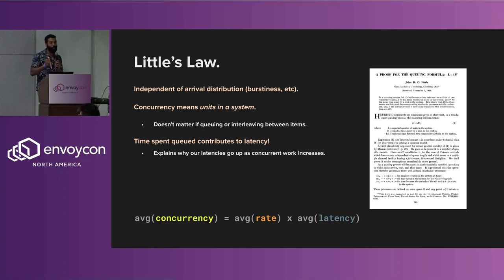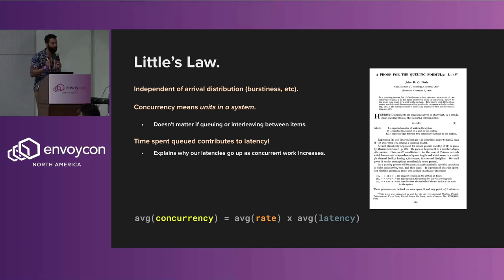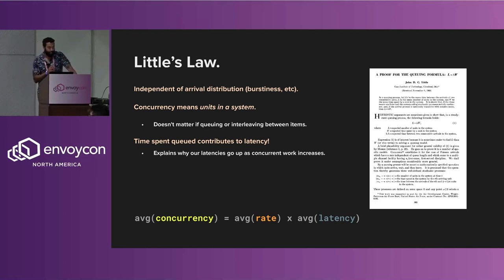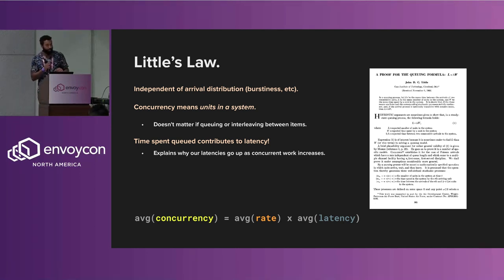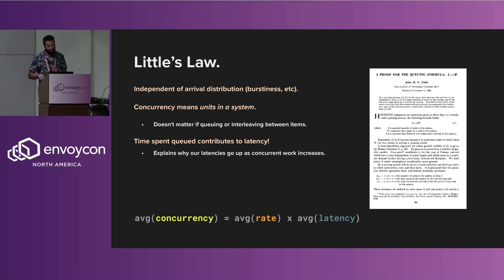It seems obvious to a lot of people, but there's some nuance here. It's independent of the arrival distribution of the requests — we can have giant tails, or it can all be that exact same value. The concurrency in a system — and by system I mean an application — can take on any form: it can be a queue, or we can just have a bunch of floating requests that we're interleaving between and juggling. Another interesting thing is that the time spent queued in the system is what's contributing to observed latency, by whoever sent that unit into the system. This explains why latencies go up as concurrent work increases.